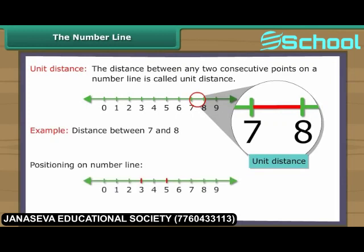Out of two whole numbers, the greater number comes on the right of the other number on the number line.